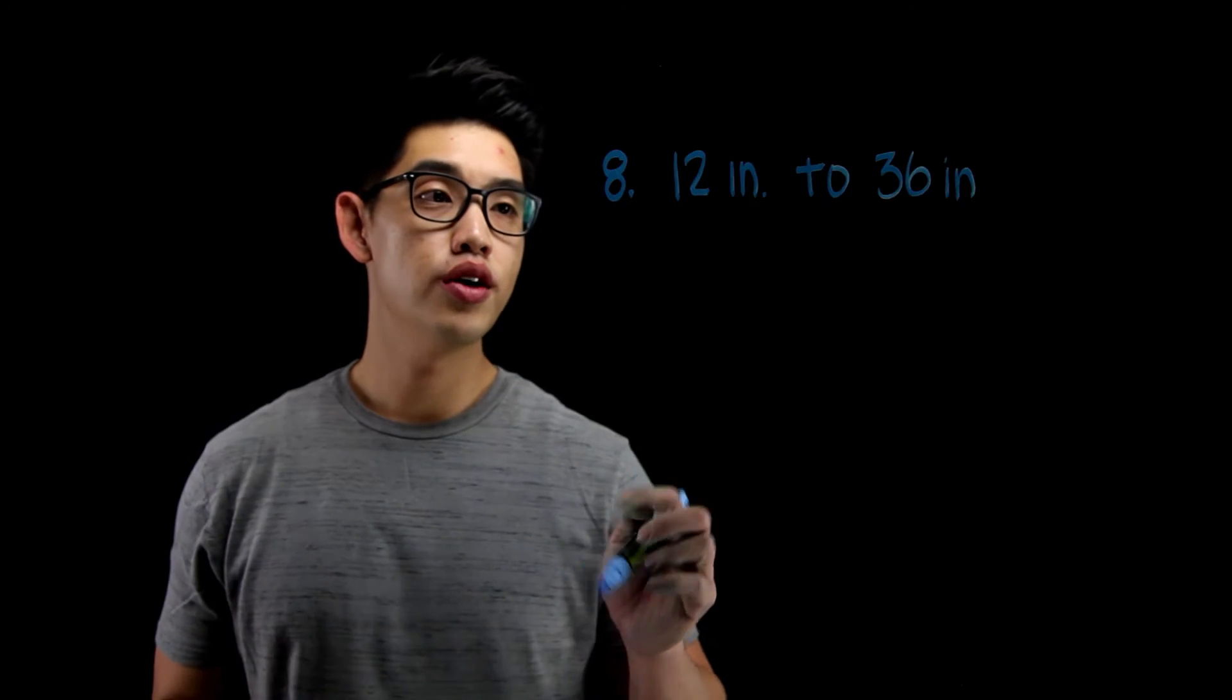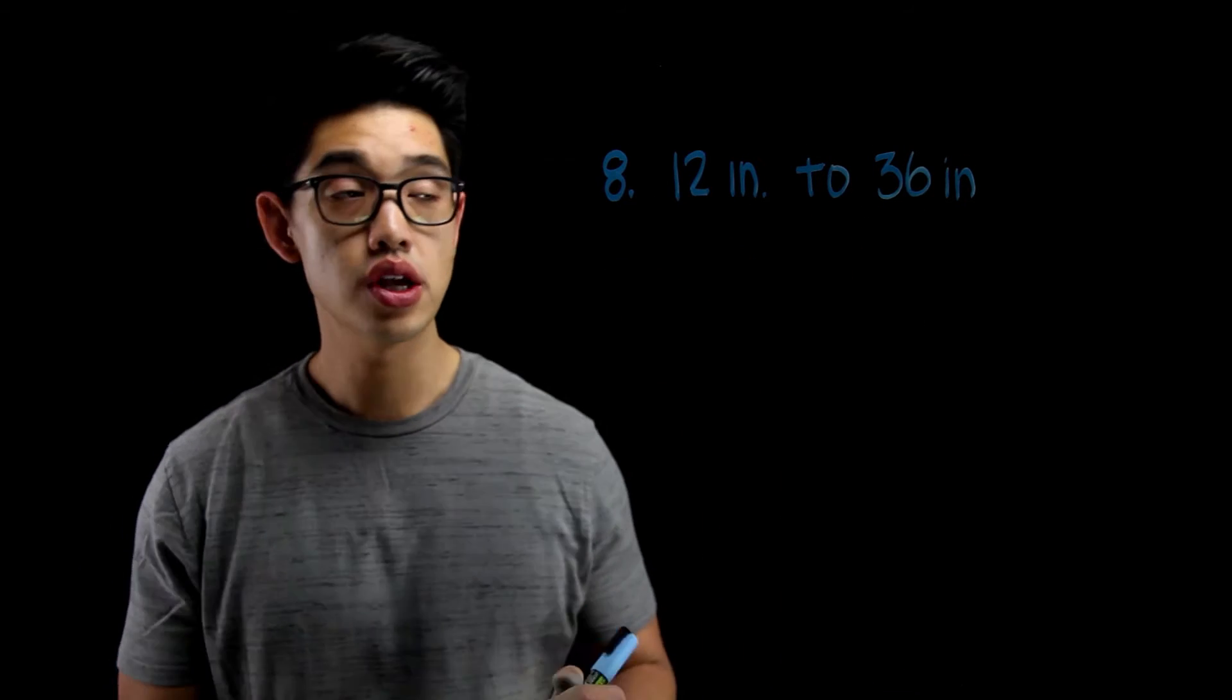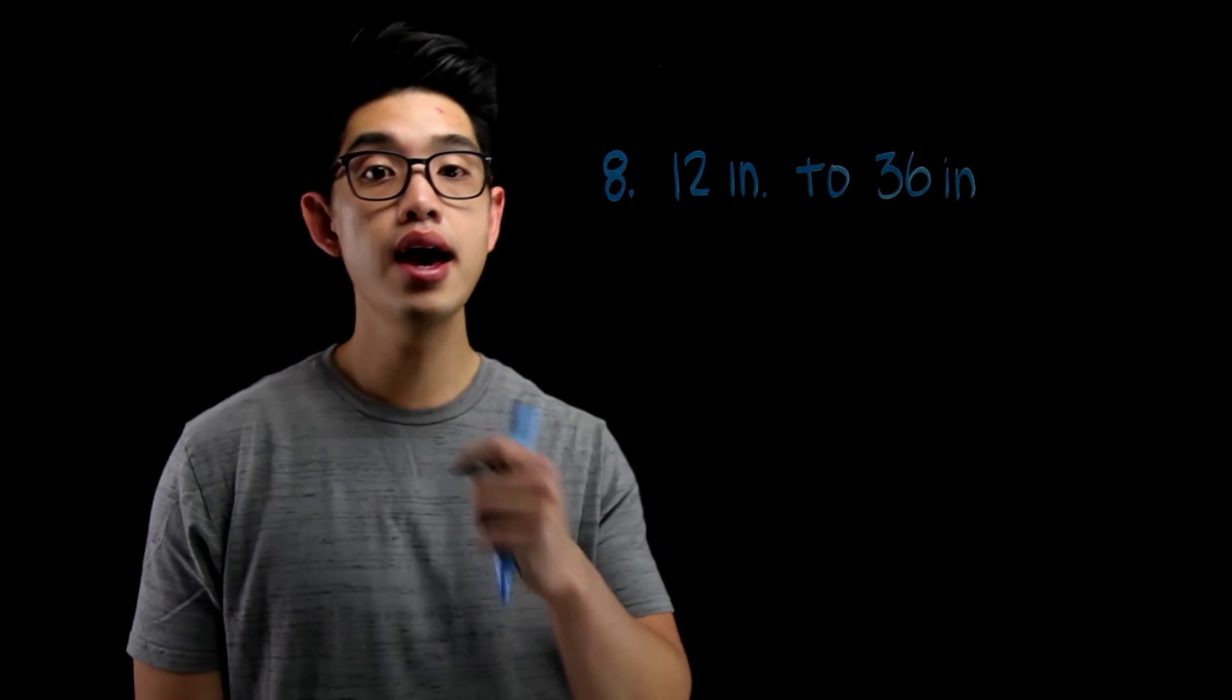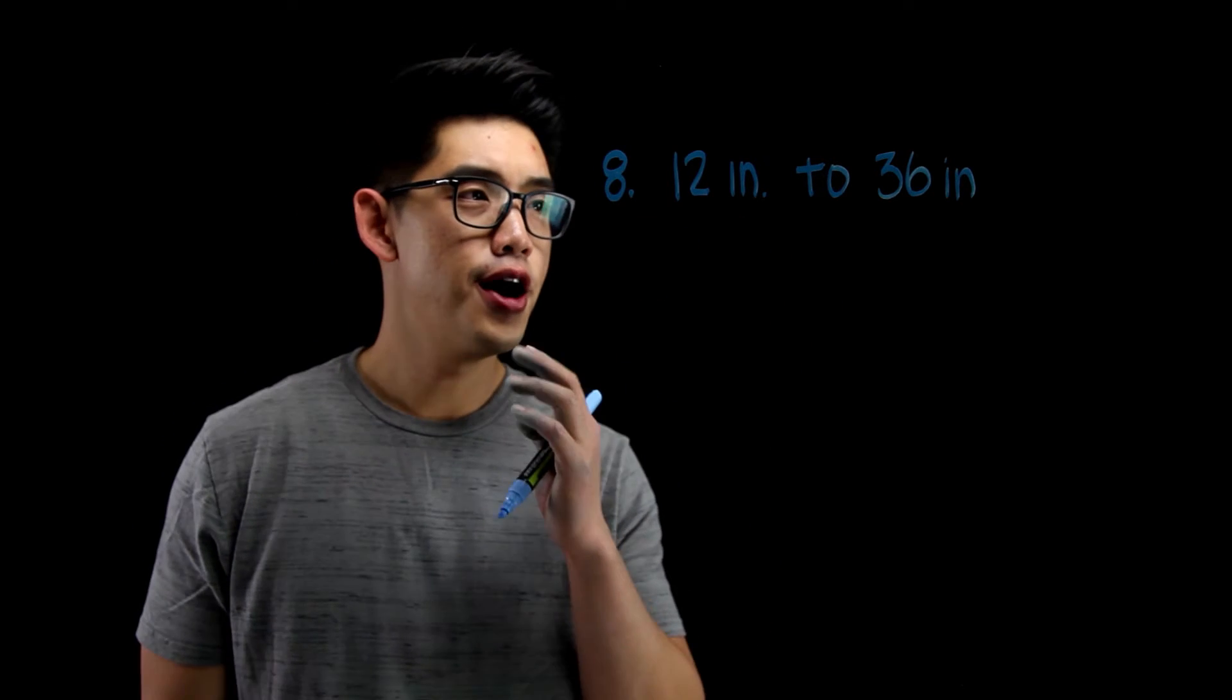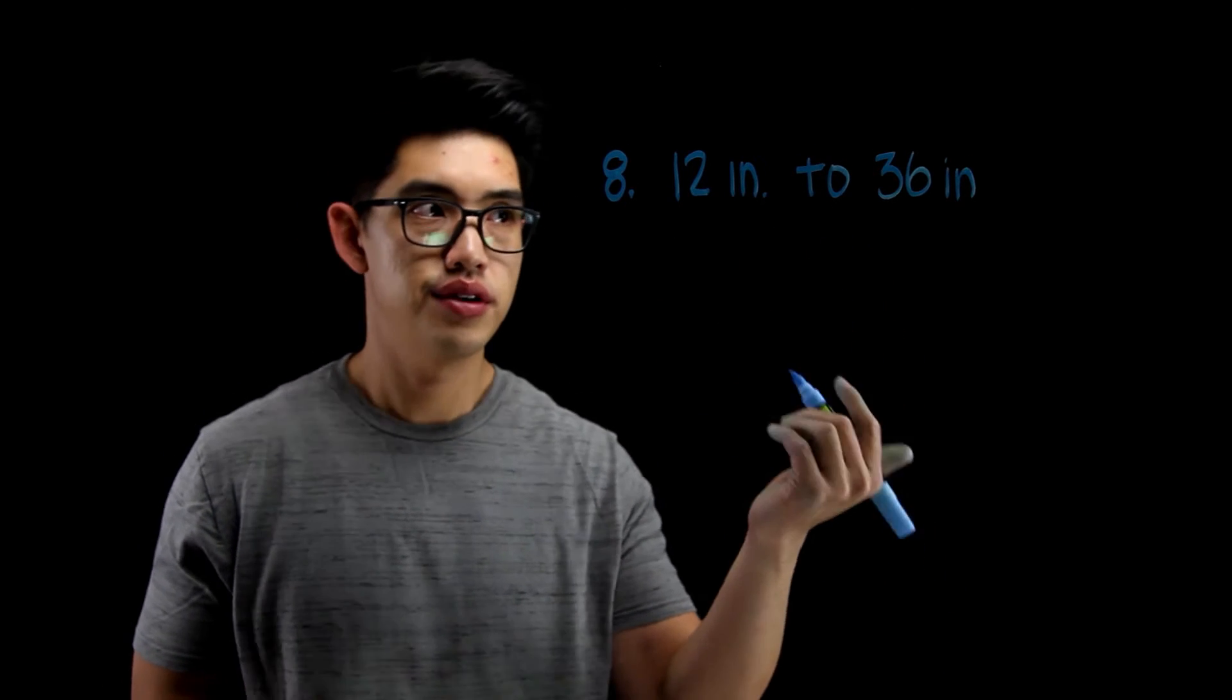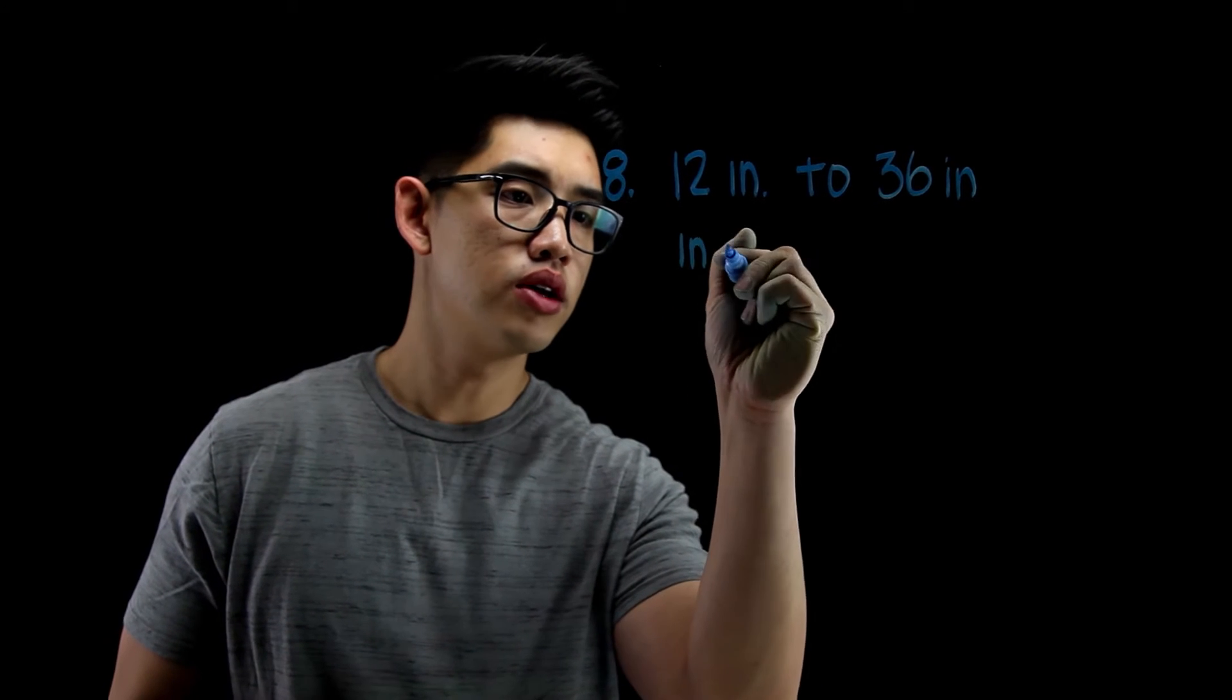For number 12, it says that you have 12 inches here and it became 36 inches. We want to try to figure out if this was an increase or a decrease and by what percent. Well, obviously, from 12 to 36, that is obviously an increase because it went from a small number to a big number. So I'm going to write increased.